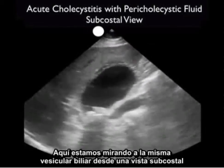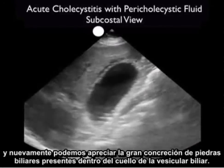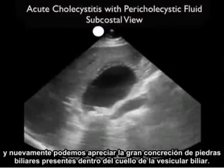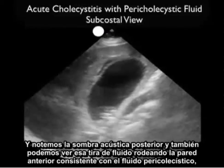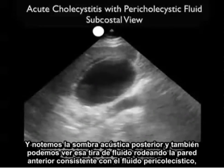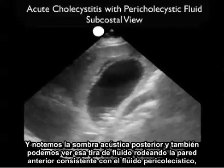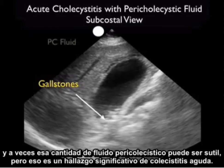Here we're looking at that same gallbladder from a subcostal view. Again we can appreciate the large concretion of gallstones present within the neck of the gallbladder and note the posterior acoustic shadowing. We can also see that stripe of fluid surrounding the anterior wall consistent with pericholecystic fluid. Sometimes that amount of pericholecystic fluid can be subtle, but it's a significant finding for acute cholecystitis.